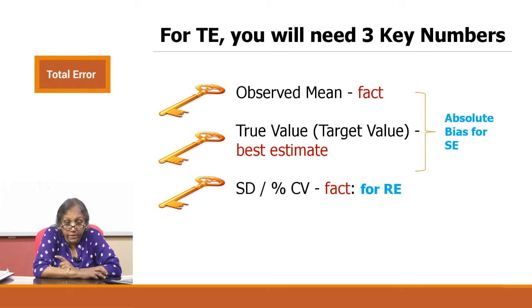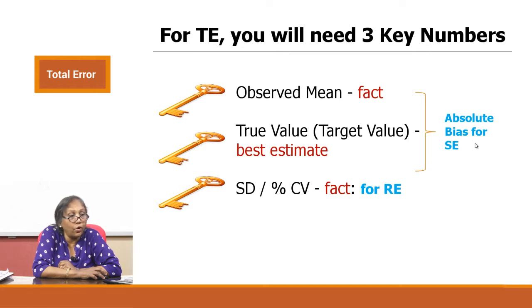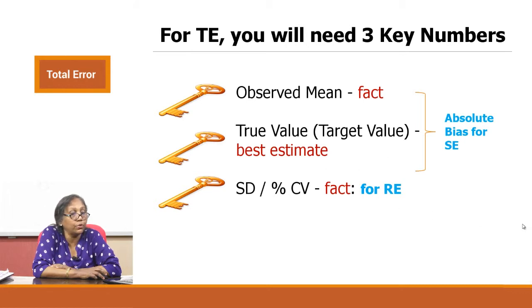The three key numbers are: the observed mean, which is a fact you have calculated in your lab; the true value, which is the best estimate like the peer group mean; and together they give the absolute bias, also called systematic error. CV percent is again a fact depicting your dispersion and will represent your random error. We now need to understand how to put all these together to arrive at your total error.